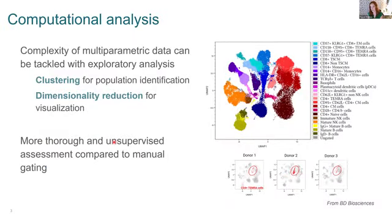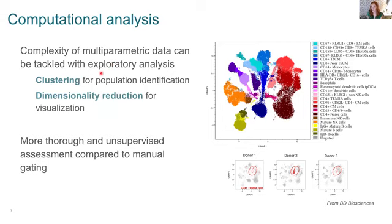What's the alternative to manual analysis? This is really where computational analysis has started to take off. As our data gets bigger, we're trying to catch up on the best way to analyze it efficiently and interpret it with the human eye. Computational cytometry is starting to have a place — these tools have always been used in large data sets like sequencing, but they're becoming more commonplace in flow cytometry as panels get bigger. Computational analysis allows us to tackle the complexity of a large data set and enables exploratory analysis.